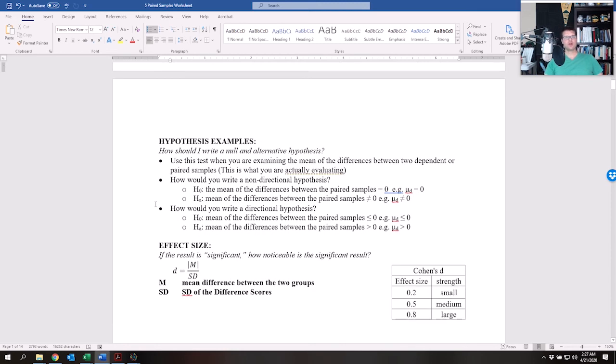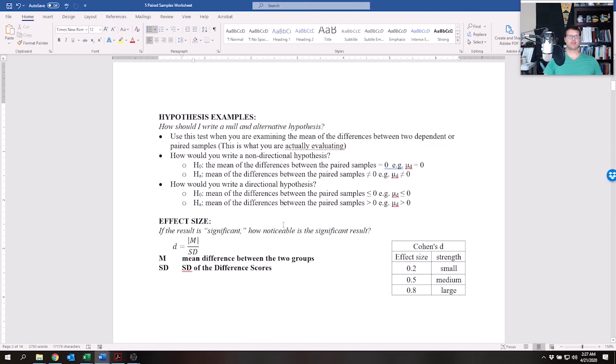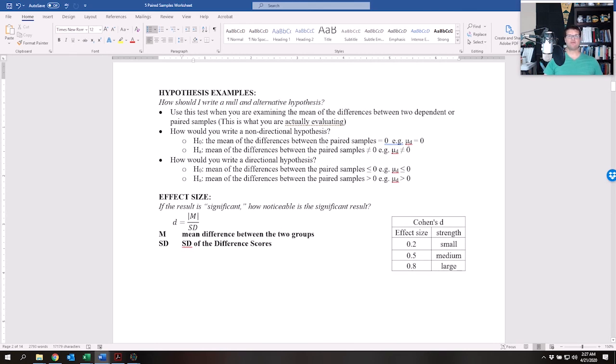And then we've got the hypothesis examples which are right here, which won't make too much sense until we actually get into it, but they are written very differently. Once again, like I said, we are comparing the difference scores. And so you'll notice that it says the mean of the differences between the paired samples. So in other words, the average difference between the paired samples equals zero, as compared to does not equal zero. The average mean of the differences between the paired samples is less than or equal to zero. The average mean of the differences between the paired samples is greater than zero. And so right now all that we're doing is we're comparing the mean difference.